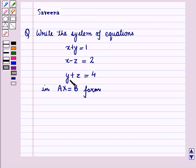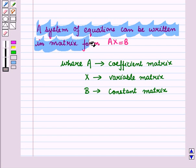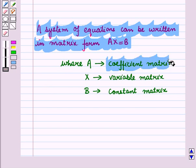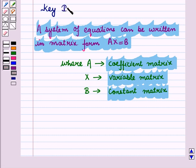We have to write it in AX equals B form, that is in matrix form. Before starting the solution we should know a key result: a system of equations can be written in matrix form AX equals B, where A is the coefficient matrix, X is the variable matrix, and B is the constant matrix. This result will work as a key idea for solving the given question.